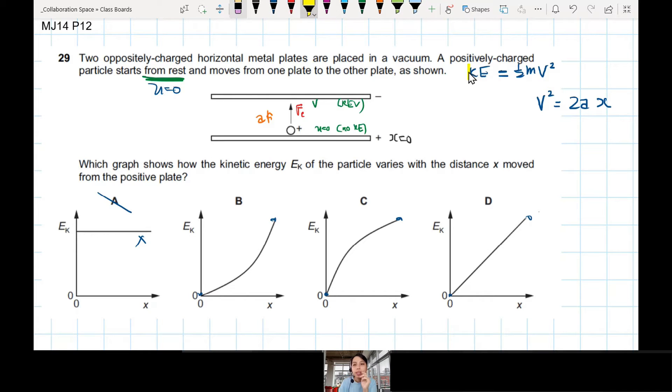Now we do the link. KE is proportional to v squared, and v squared is proportional to x. Hence, I can say, hence, kinetic energy at any point along this journey is proportional to x.